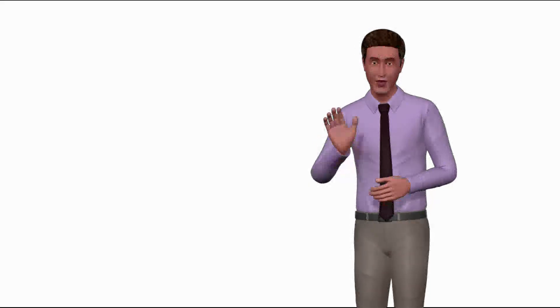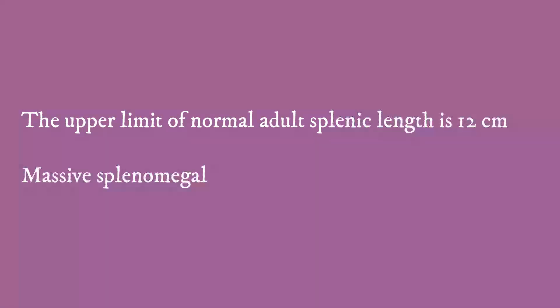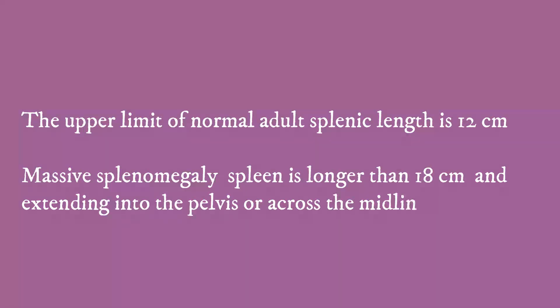Splenomegaly means enlargement of the spleen. The upper limit of normal adult splenic length is 12 centimeters. Massive splenomegaly is defined as a spleen longer than 18 centimeters, extending into the pelvis or across the midline.